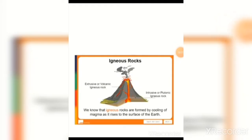Igneous rocks. We know that igneous rocks are formed by cooling of magma as it rises to the surface of the earth. Igneous rocks are mainly of two types: intrusive igneous rocks or extrusive igneous rocks. Intrusive igneous rocks form when the magma cools down inside the surface of the earth, as you can see in the picture. Extrusive igneous rocks form when the magma cools down outside the surface of the earth. In the formation of igneous rocks, only heat acts on it.